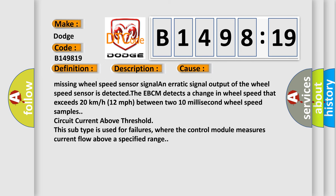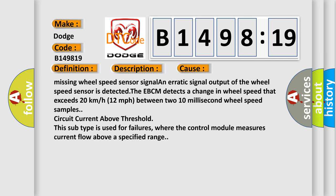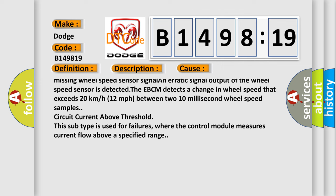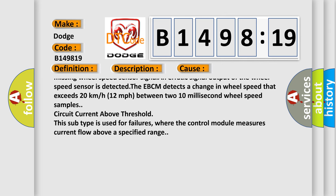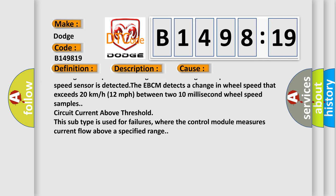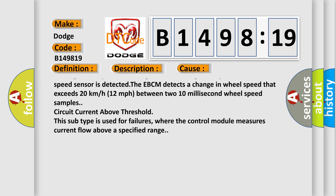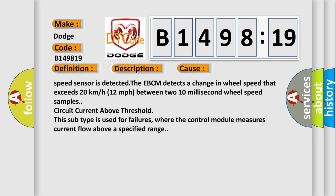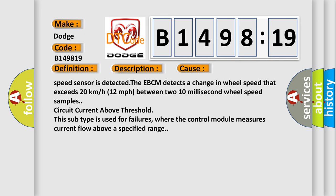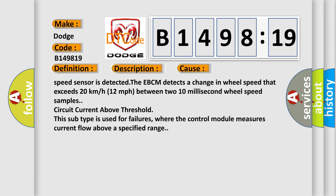Conditions for setting the DTC: A short to voltage, short to ground, or an open or high resistance is detected on a wheel speed sensor circuit. A missing wheel speed sensor signal and erratic signal output of the wheel speed sensor is detected. The EVCM detects a change in wheel speed that exceeds 20 kilometers or 12 miles per hour between two 10 millisecond wheel speed samples.